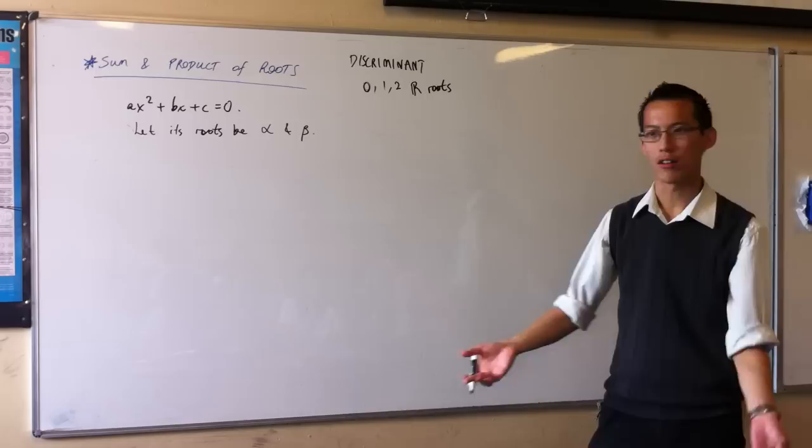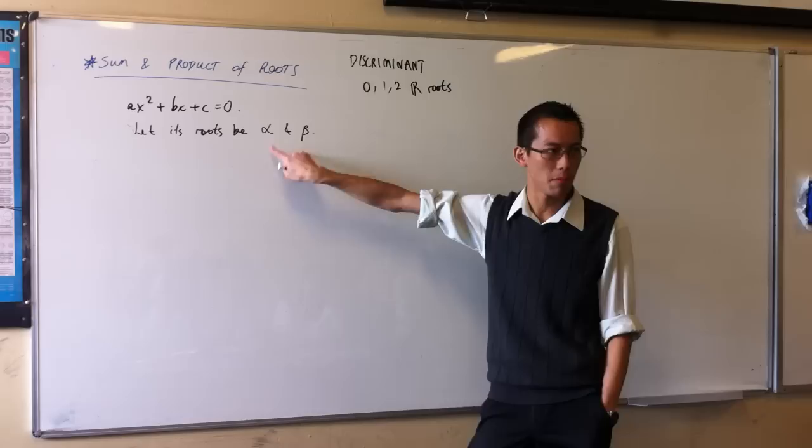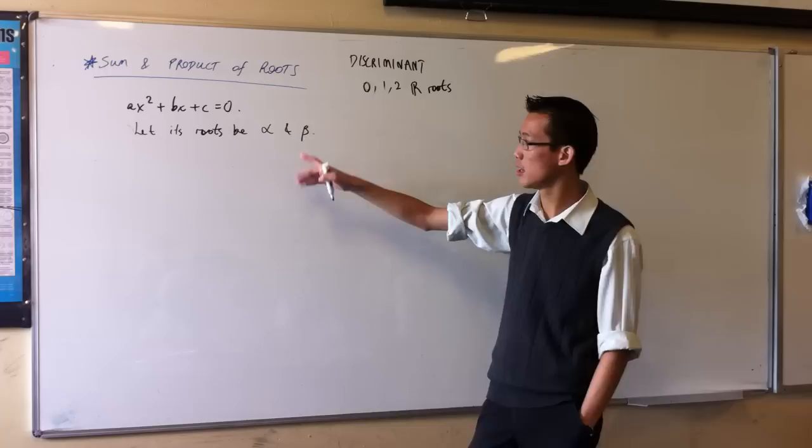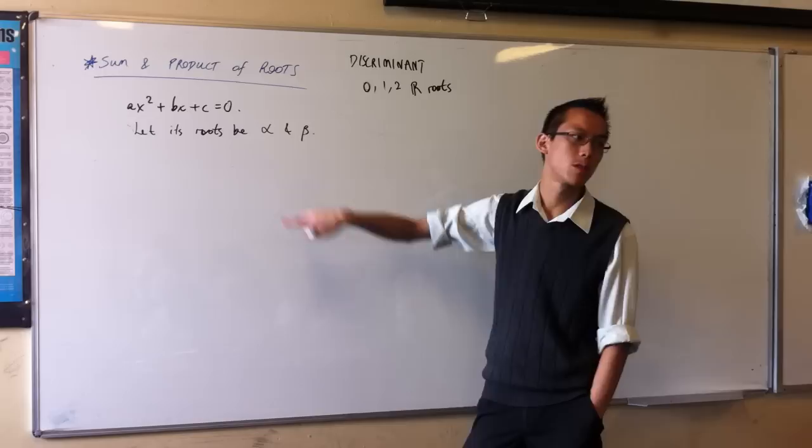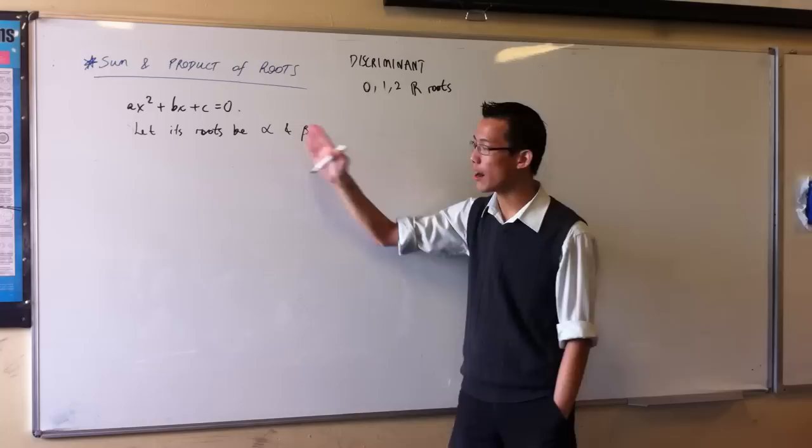But when you're talking about roots in general, of any nature, a quadratic has to have two. It must have two. They might be complex, which we don't have to really worry about yet, but they're there, they exist. They could be equal, but there's still two of them, or they could be distinct and real, which is what we normally use to dealing with. So I'm going to call them alpha and beta. They have to be two.